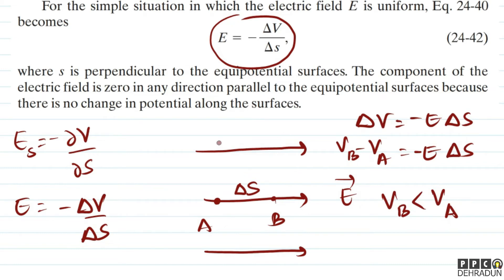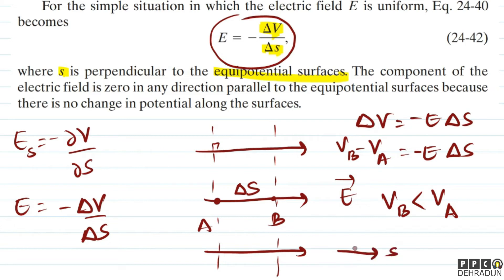The field direction is perpendicular to the equipotential surface. For a uniform field: E = −ΔV/ΔS, where S is perpendicular to the equipotential surface. The component of the electric field is zero in any direction parallel to the equipotential surfaces, because there is no change in potential along those surfaces.